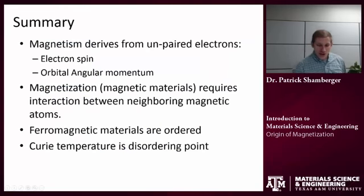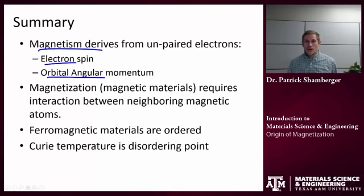Okay, so in summary, magnetism is deriving from unpaired electrons, and there are two contributions: electronic spin and orbital angular momentum contribution. These two things can interact and can lead to the magnetic moment on a given atom or ion. When we think about magnetization, bulk magnetization in solid materials, we think about this as requiring an interaction between neighboring magnetic atoms. That's what we call a ferromagnetic material, when their magnetic moments are all aligned in the same direction. All ferromagnetic materials, if I heat them up to high enough temperature, will disorder. That disorder point is what we call the Curie temperature. I can have other sorts of magnetic order, but we're not going to get into those in this case. Thanks.